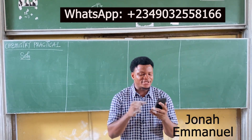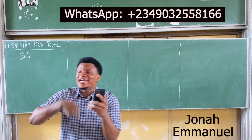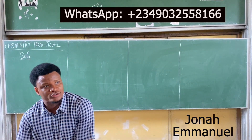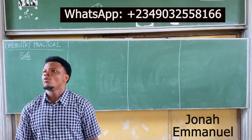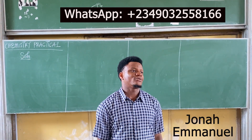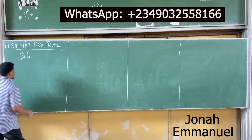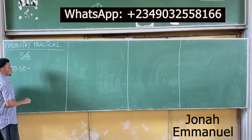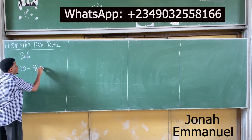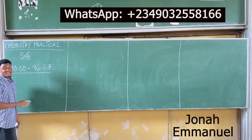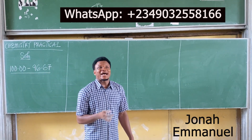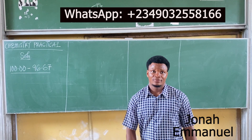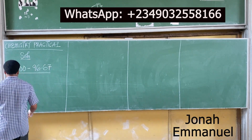So the concept is: whenever you have percentage error, it's always true value minus observed value, all over true value. For this case, the true value is 100.00 minus the observed value 96.67, all over true value 100.